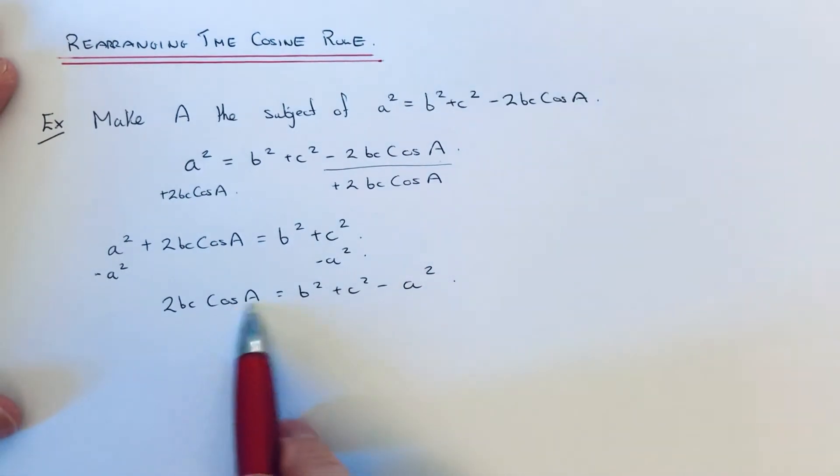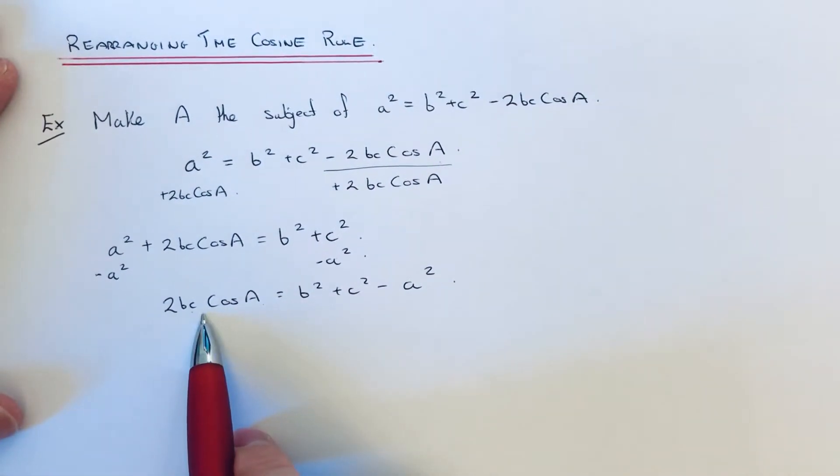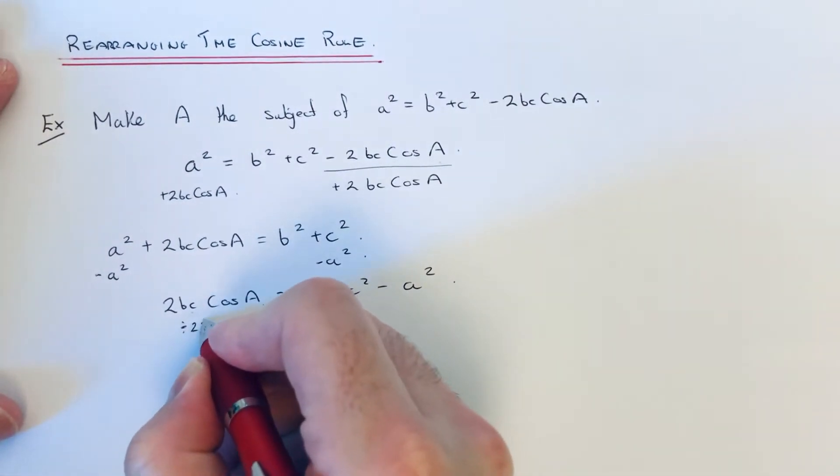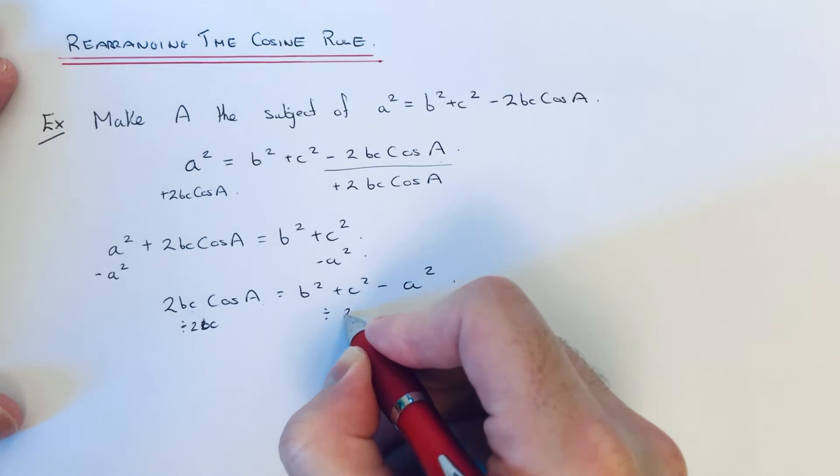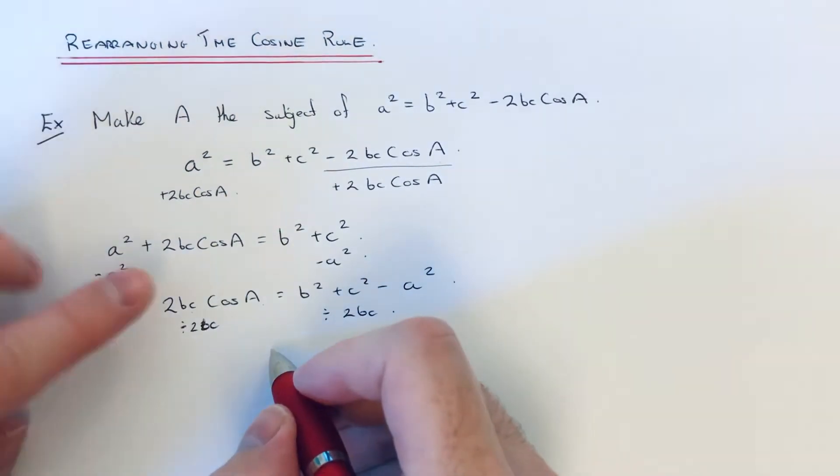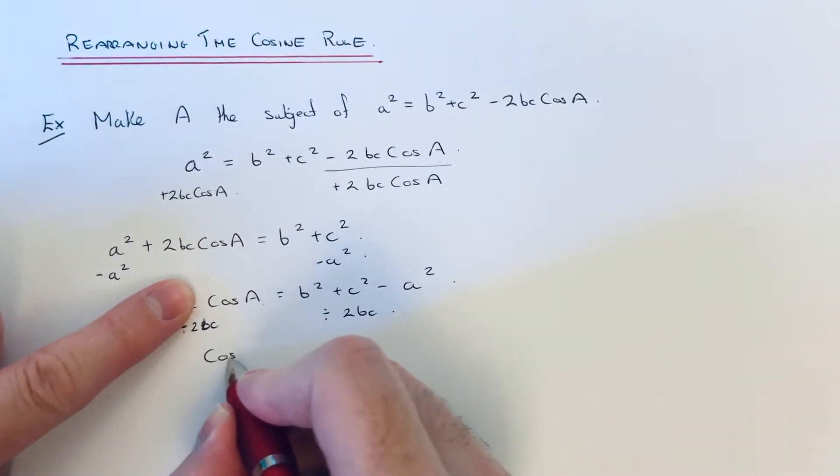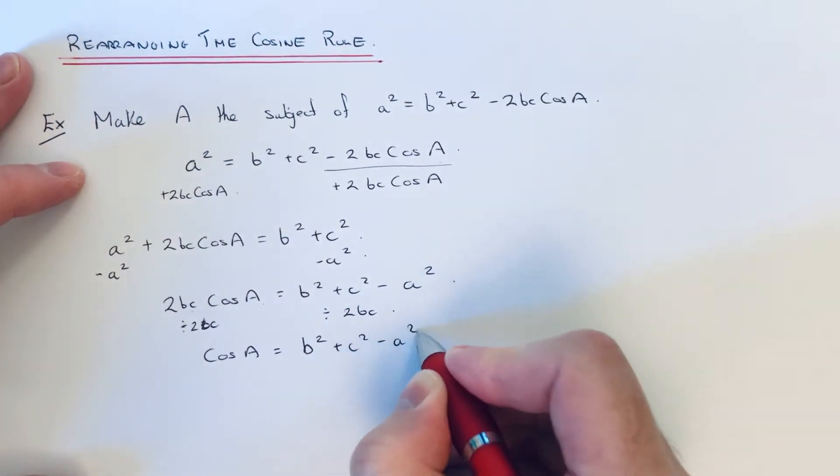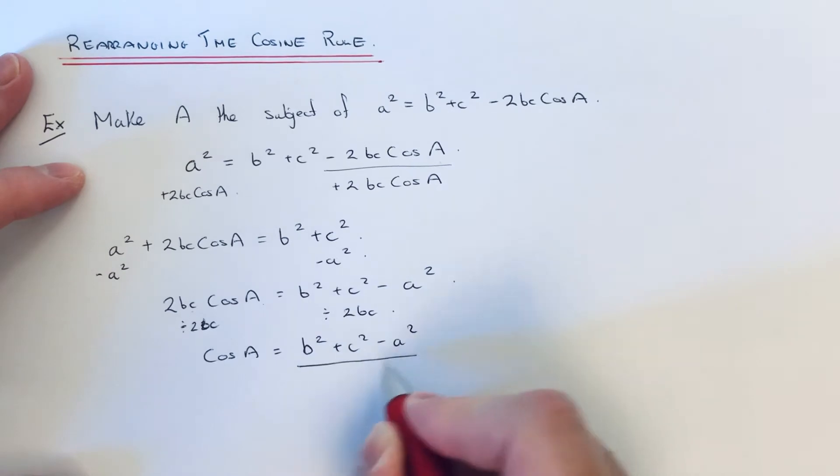So cos A has now been multiplied by 2bc. To get rid of the 2bc we need to divide by 2bc. So that will leave us with cos A equals b squared plus c squared minus a squared. We need to write that as a fraction.